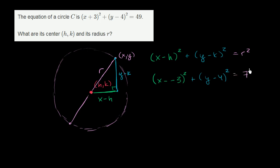is equal to, instead of 49, we can just call that 7². And so now it becomes pretty clear that our h is -3, and that our k is positive 4, and that our r is 7. So we could say (h, k) is equal to (-3, 4).